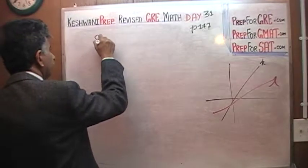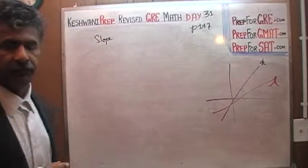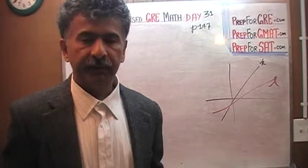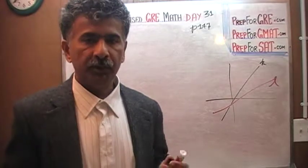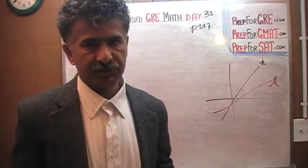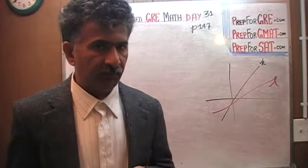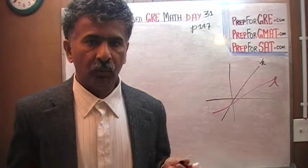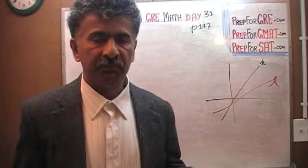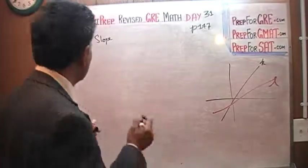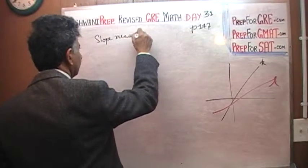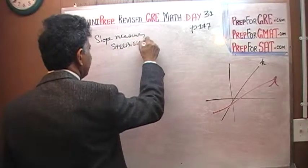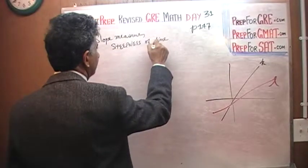Ridiculously simple, that is. The slope — what does slope measure? If somebody were to ask you, it may be a simple question, but let's learn something out of it. If somebody asked you, what does slope measure, how would you articulate it in simple English language? I'm not asking how to measure it; don't tell me rise over run. I'm asking a simple question: what does slope measure? Slope measures the steepness of the line.